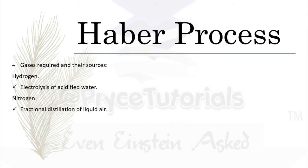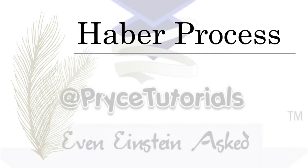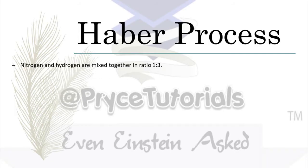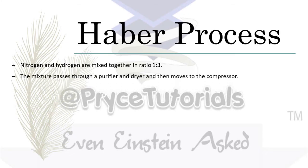Two gases are mixed: hydrogen and nitrogen. The hydrogen is obtained from the electrolysis of water, and the nitrogen is obtained from the fractional distillation of liquid air. The two gases are mixed in the ratio 1 to 3. The mixture is then passed through a purifier to make sure the gas doesn't have any impurities.